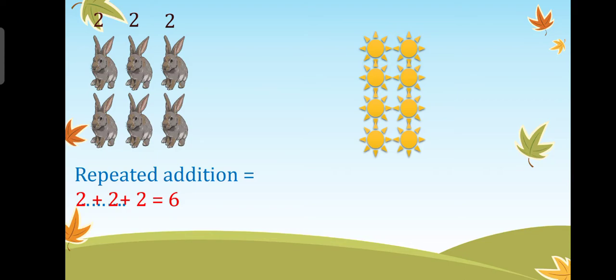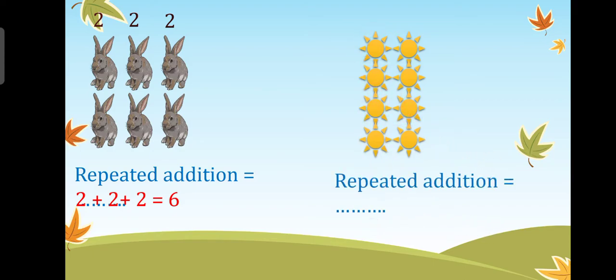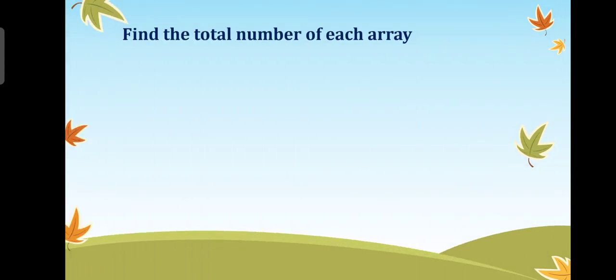Now we have this set of stars. Each column contains how many stars? It contains four stars: one, two, three, four. So by repeated addition it will be four plus four plus four equals eight.